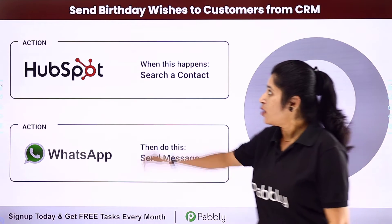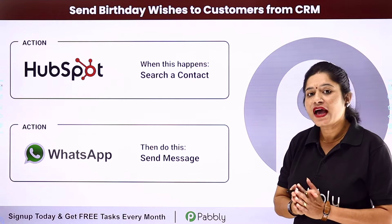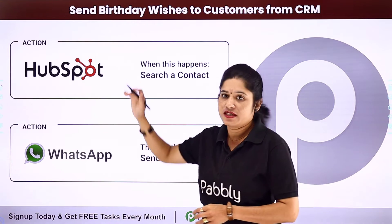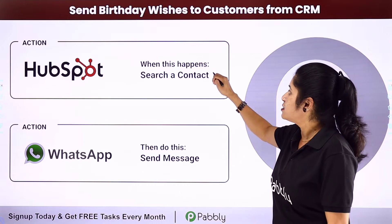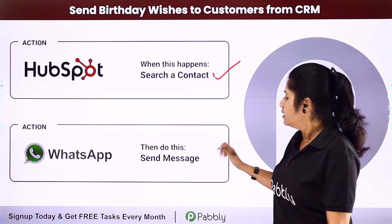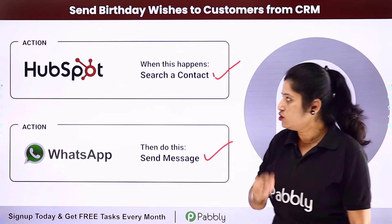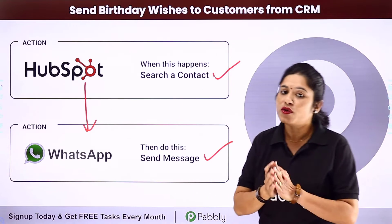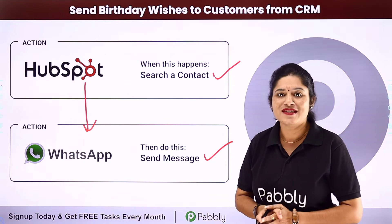In this video we are going to learn how you can send birthday wishes to customers from CRM. You have your customer details in a CRM software application — HubSpot CRM. First we will search for specific contact details whose birthday falls today, and then we will send a birthday wish message to the customer on their WhatsApp number. For that, you need to integrate HubSpot CRM with WhatsApp using Pabbly Connect.